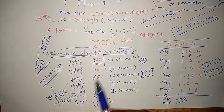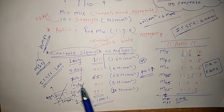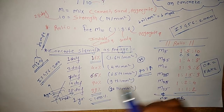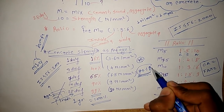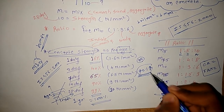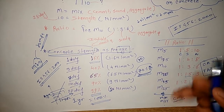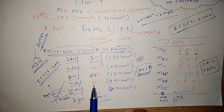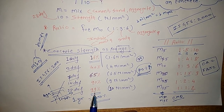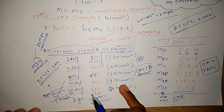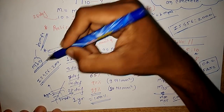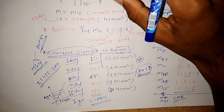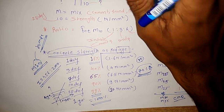These percentages are simple to remember: 16% at 1 day, 40% at 3 days, 65% at 7 days, 90% at 14 days, and 99% at 28 days. On site, a minimum of 70 percent strength is required after 7 days. After 28 days we get 99 percent, but actually 100 percent strength is achieved after approximately one year.